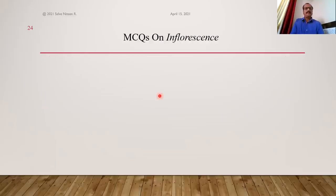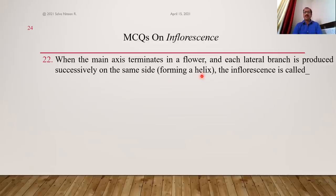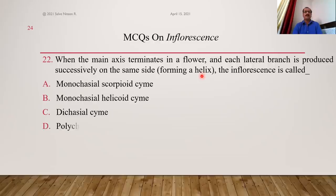When the main axis terminates in a flower and each lateral branch is produced not on different sides but on the same side — always right or always left — it forms a spring-like helix structure. Such an inflorescence is called monochasial helicoid cyme, because it forms a helix, with a single lateral branch produced each time. B is the answer.